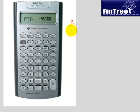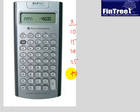Now let's calculate. X values: 10, 15, 20, 25, 40. Calculate both the population and sample standard deviation.